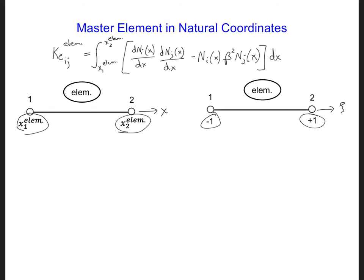By looking at these elements in these two coordinate systems, we can come up with a relationship between x and psi. Psi is equal to 2 times x minus x1 element over x2 element minus x1 element, and all of this minus 1.